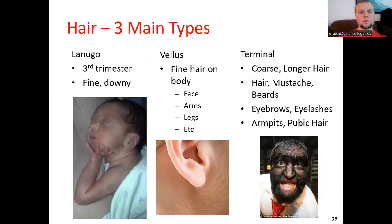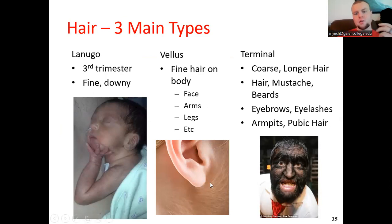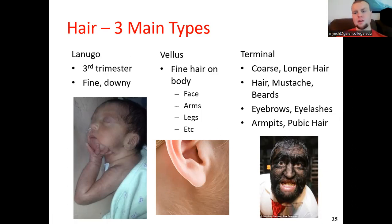There are three main types of hair. Lanugo hair grows during the third trimester and usually disappears a couple of weeks after birth. Vellus hair consists of the fine, wispy, light-colored hairs found over the body — on the face, arms, and legs. Terminal hair is our permanent hair: the long hair on the head, beard hair, and bodily hair on the chest and stomach.